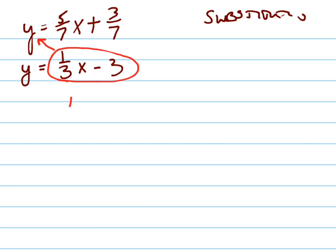So I'm plugging 1/3x minus 3 in for y in the first equation. And that gives me, instead of two equations with two variables, one equation with only one variable, namely x.